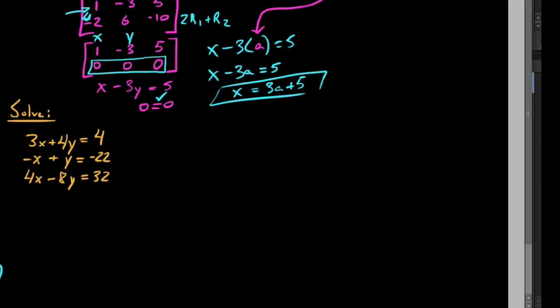This last example is interesting: we have two variables but three equations — three lines. We want to know if they all cross at a single point, which often doesn't happen. Let's set up the augmented matrix. It's a 3×3 augmented matrix with entries 3, 4, negative 1 in row 1; 1, 4, negative 8 in row 2; and constants 4, negative 22, and 32.